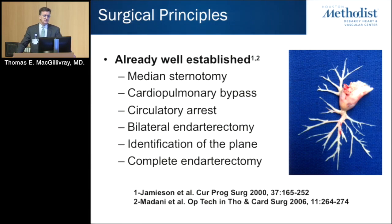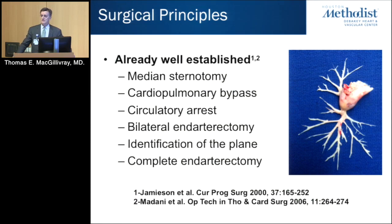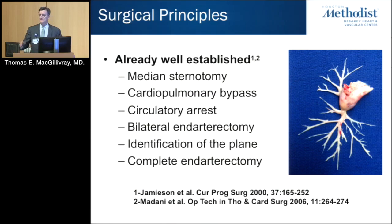The surgical principles — as I used to teach my residents, when you're doing an operation you have to have a plan. The plan of this operation is very different from doing a pulmonary embolectomy for acute PE. For acute PE, you go on bypass, keep the heart beating, open the pulmonary artery, put in a forceps, pull out an organized clot, sew up the artery, and you're done. It's a pretty easy operation. That is not this operation — it's a much different operation.